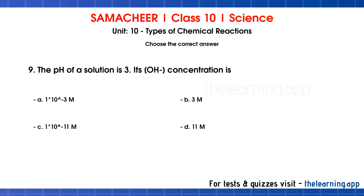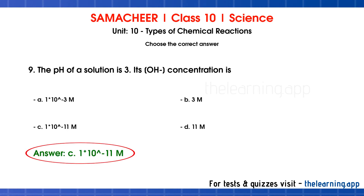Ninth question: The pH of a solution is 3. Its OH- concentration is dash. Options are A) 1×10^-3 M, B) 3M, C) 1×10^-11 M, D) 11M. Correct answer is option C: 1×10^-11 M. Since pH is 3, pOH is 11, so OH- concentration is 1×10^-11 M.